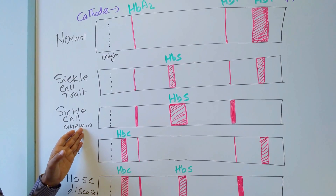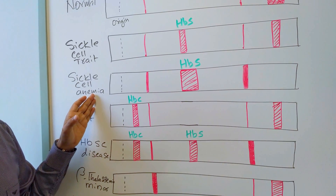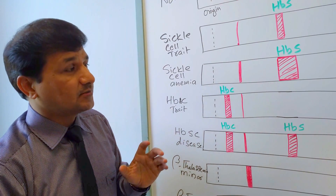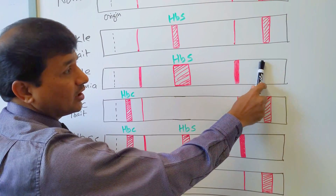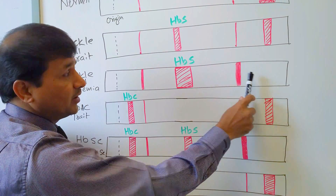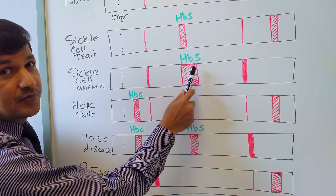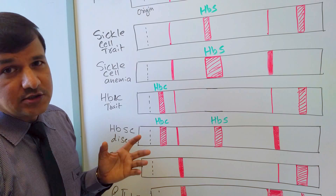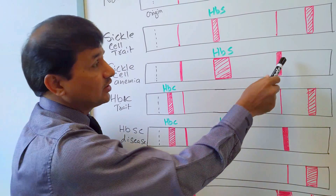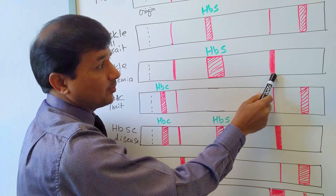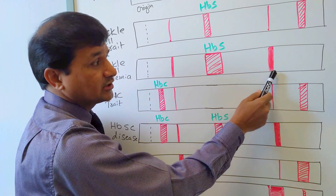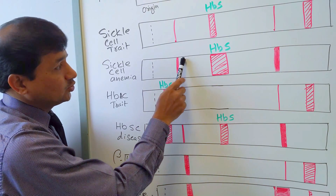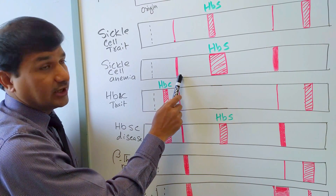In sickle cell anemia, both beta globins have glutamate replaced by valine at the sixth position. Because of that, there is no normal adult hemoglobin — only HbS in the middle. Since no useful normal adult hemoglobin is synthesized, fetal hemoglobin is increased as a compensation mechanism, and HbA2 — the minor adult hemoglobin — is also increased slightly.